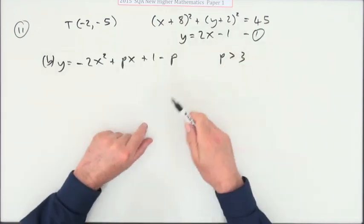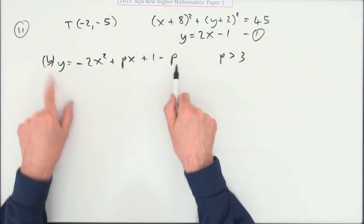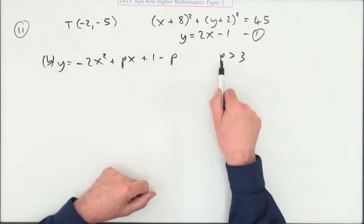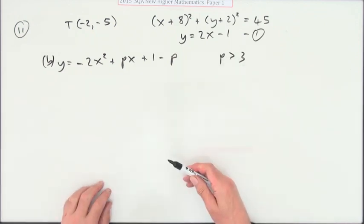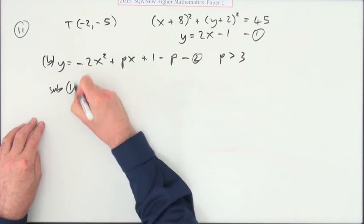Now part b. This line, which was a tangent to that circle, is also a tangent to this curve, to this parabola. You have to figure out the value of p given that the value of p is greater than 3. Well, if it's also a tangent to that, then the first thing I'll do is I'll substitute it in to look for points of intersection.